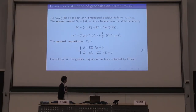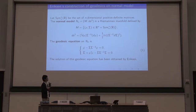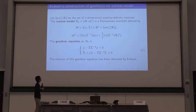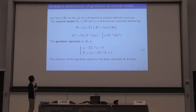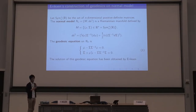I'll start with the previous result by Eriksen in 1987, which constructed the explicit geodesics on the normal models. Let Sym(N+) be the set of n-dimensional positive definite symmetric matrices. The normal model, denoted by NN, is a Riemannian manifold defined by a given coordinate system and metric. This manifold itself is a direct product of n-dimensional Euclidean space and Sym(N+), and this metric is a Fisher information metric defined from a family of normal distributions.